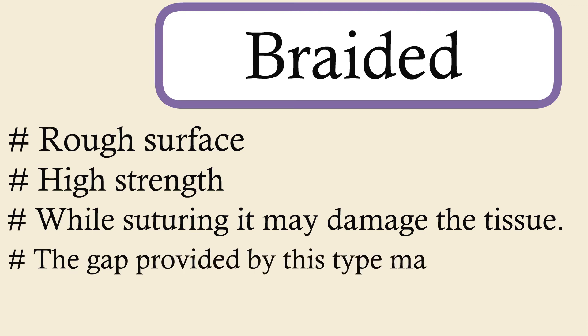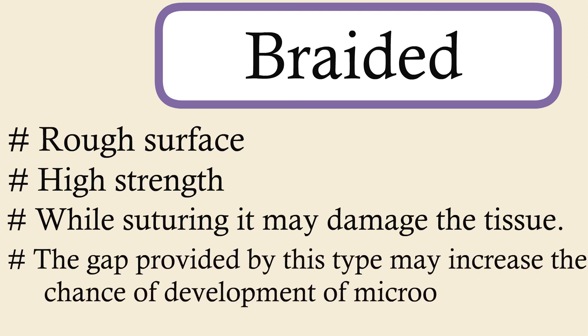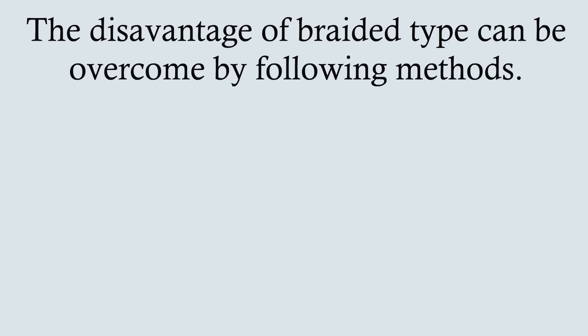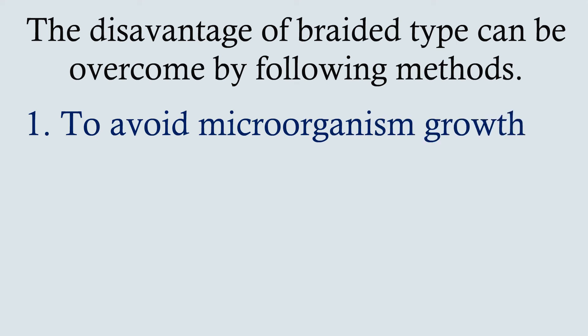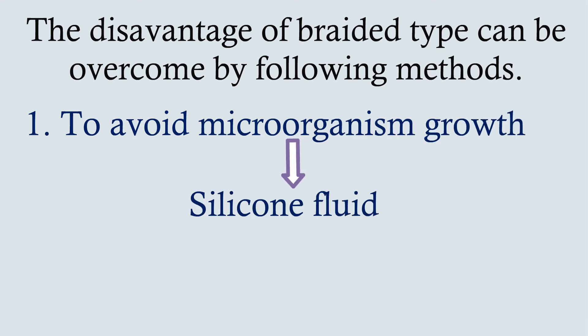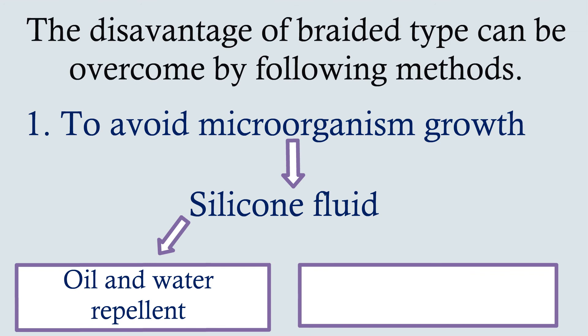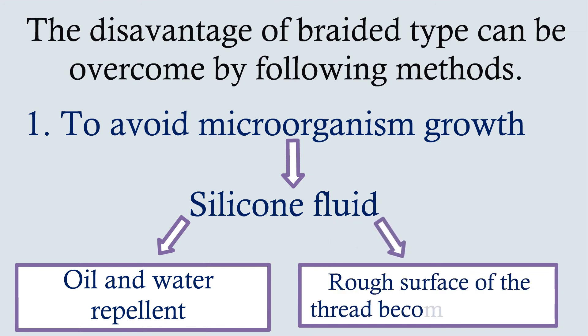The gap provided by the braided type may increase the chance of development of microorganisms. The disadvantage of the braided type can be overcome by the following methods. To avoid microorganism growth, silicone fluid may be applied. The silicone fluid is water and oil repellent. Also, the rough surface of the thread becomes smooth by the application of silicone fluids.